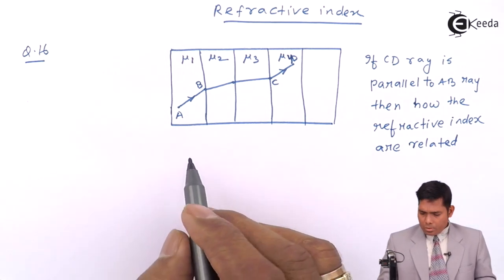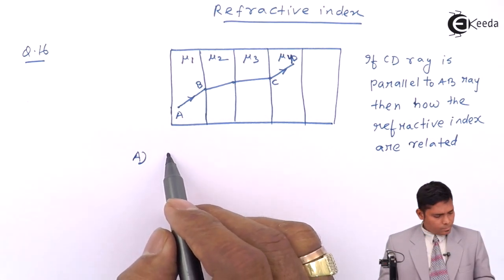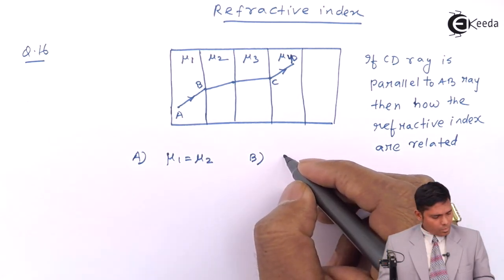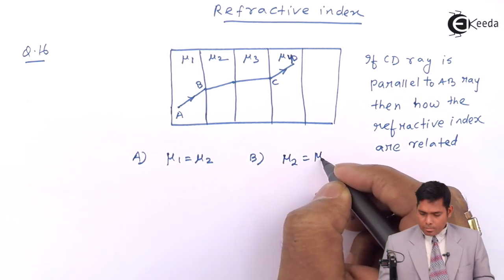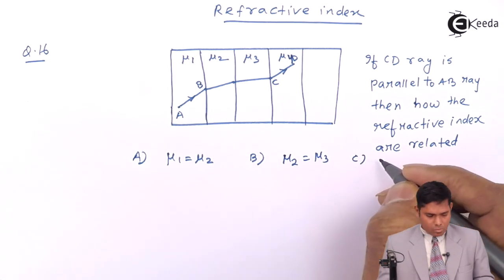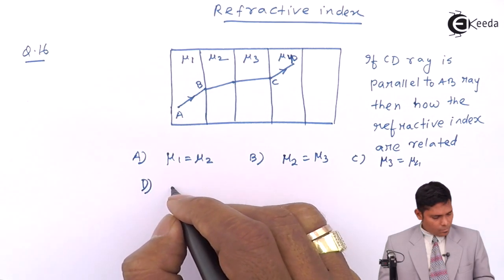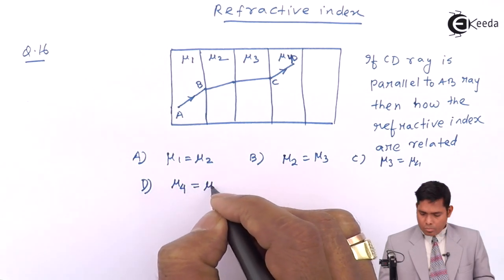I will give you options. Option A: mu1 and mu2 are same. Option B: mu2, mu3 are same. C: mu3, mu4 are same. D: mu4 equals to mu1.